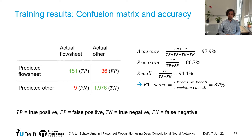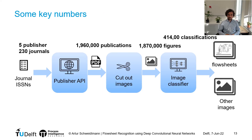To give you some key numbers from when we applied the algorithm in an actual setting: we looked at five publishers and considered about 230 journals. We are currently operating the algorithm 24/7 on a server with about 2 million publications — though it's important to note there are even more publications in these 230 journals that we haven't downloaded yet. So far we have extracted about 1.87 million figures from these publications, and so far we have classified about 400,000 of these images into the two categories: flowsheets and not flowsheets.